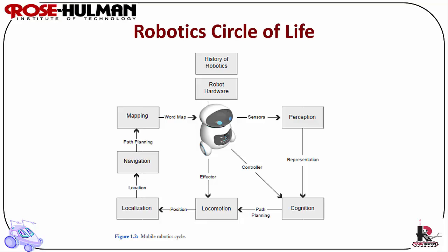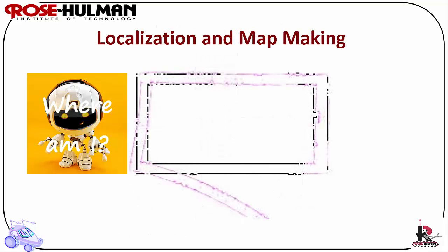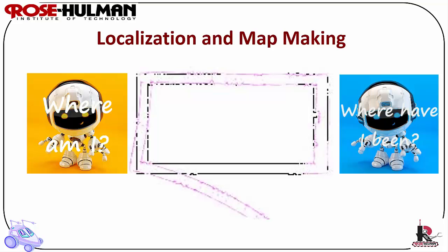The final two remaining questions in navigation are: where am I, which is localization, and where have I been, which is map making. They are closely related because a robot cannot create an accurate map if it does not know where it is. However, because shaft encoders are inaccurate, this was not always feasible.